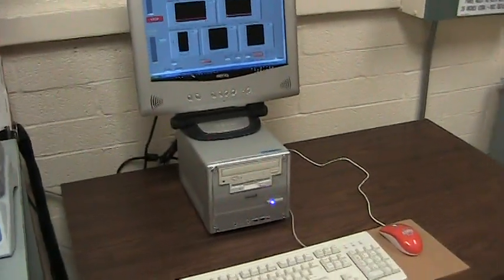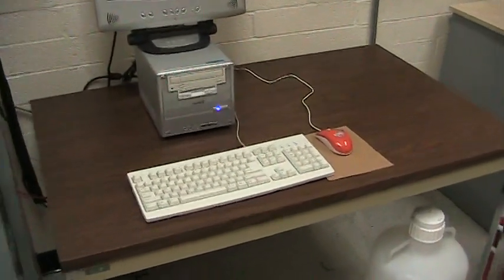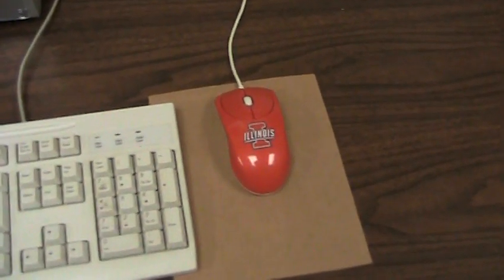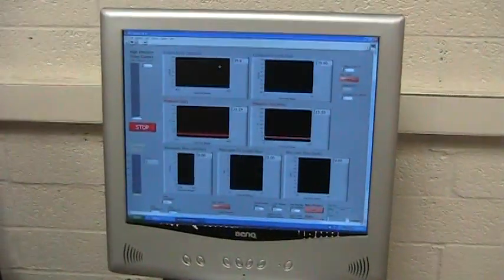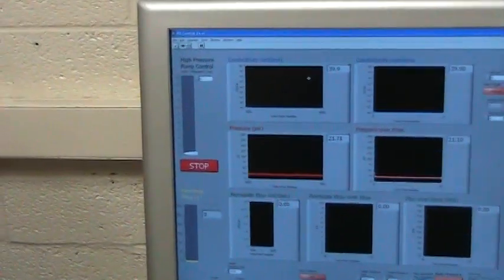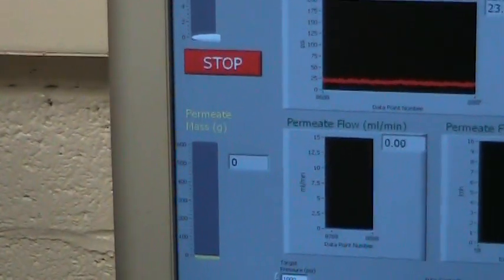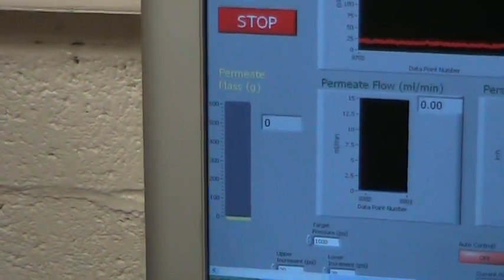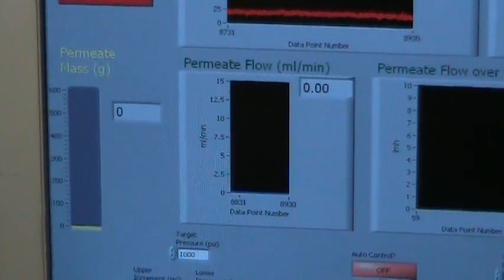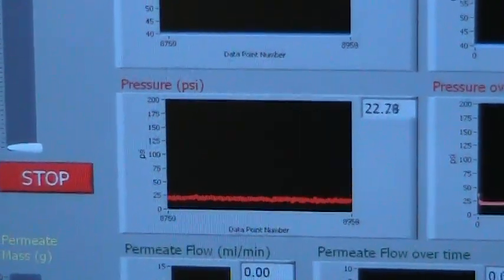Now the computer that I was talking about is this little guy over here. It's running some LabVIEW software with a little mouse and ode to Illinois there. A little souvenir from Champaign-Urbana. And we have our LabVIEW software up here so we can control the pump over here, the high pressure pump control. And we can see what our permeate mass is on this little dial. And then we can measure our permeate flow over time and our pressure over time.